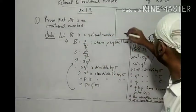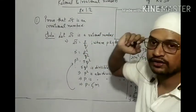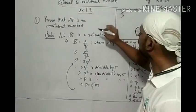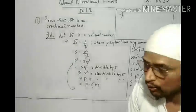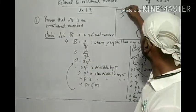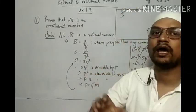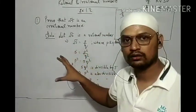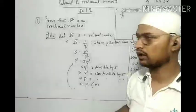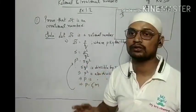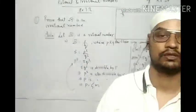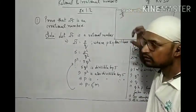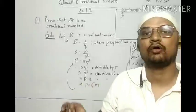Before discussing, let me confirm what a rational number is. 2 upon 3 is a rational number only when 2 and 3 don't have any common factor. So we can say that p and q don't have any common factor.